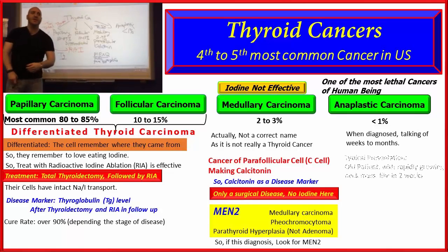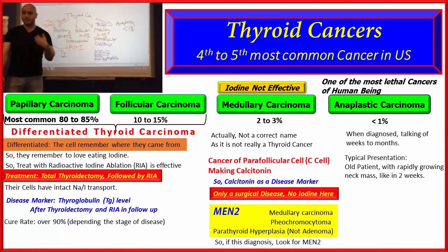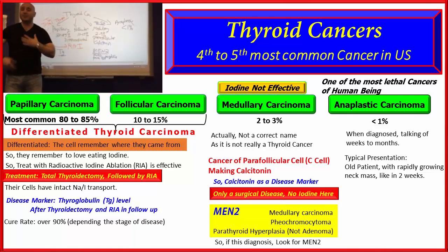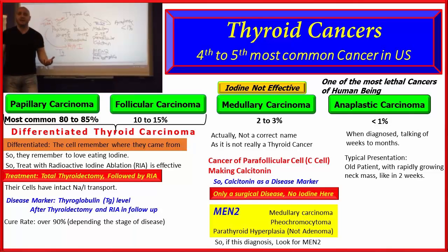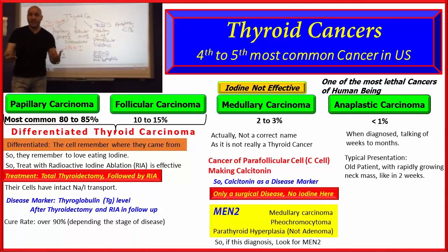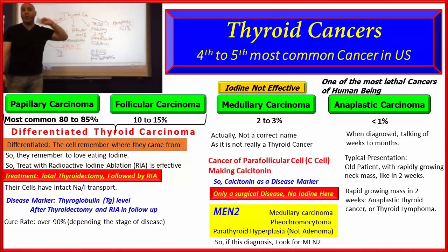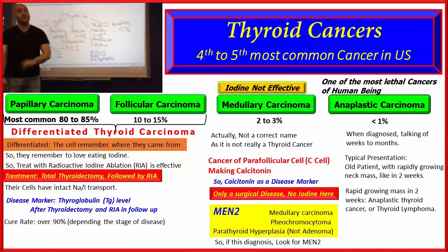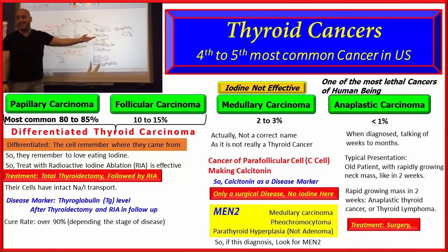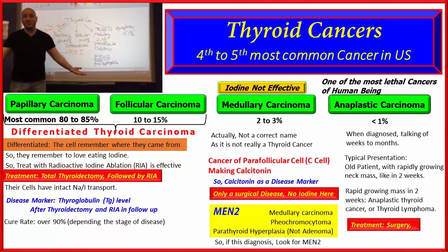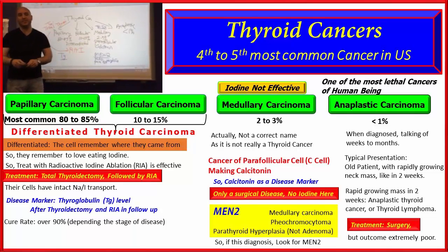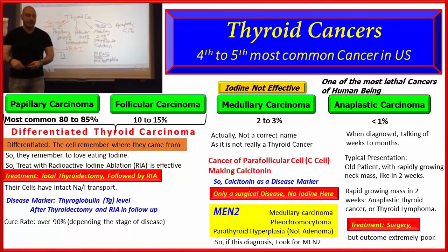How will it present? Typically an older patient with a rapidly growing neck mass, where they'll tell you: 'Doc, I was fine just two weeks ago and now I have a golf ball coming out of my neck.' Your differential diagnosis at that point is only two things: anaplastic thyroid carcinoma, or — if they're lucky — thyroid lymphoma. That's it. How do we treat anaplastic? Surgical debulking, but the outlook is extremely poor — weeks to months, very high mortality.